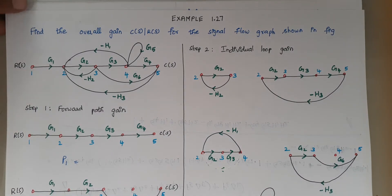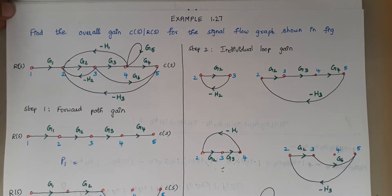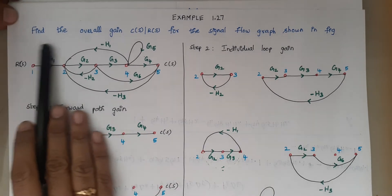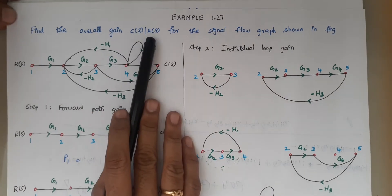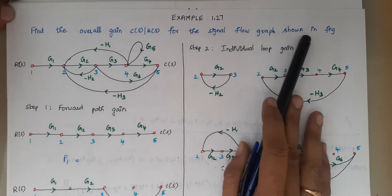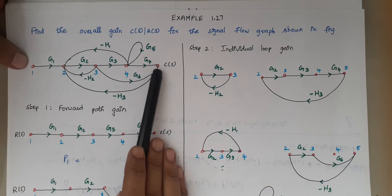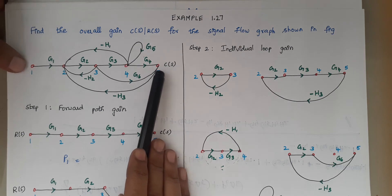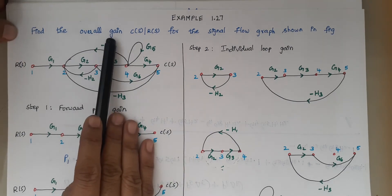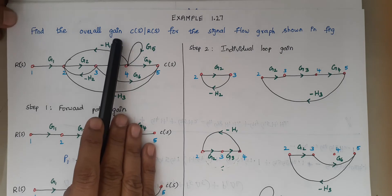Hello viewers, I am Kausalya. Today we are going to solve another signal flow graph problem. The problem is: find the overall gain C(s)/R(s) for the signal flow graph shown in the figure. The overall gain is nothing but the transfer function.